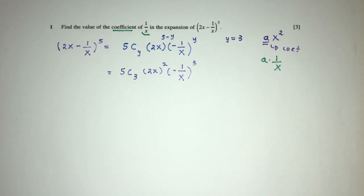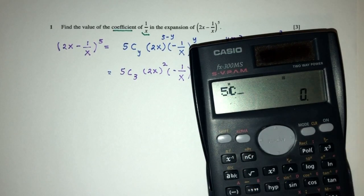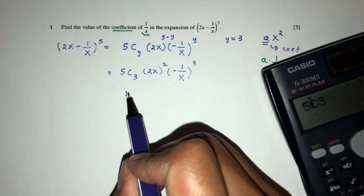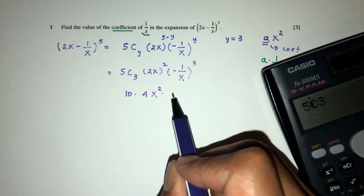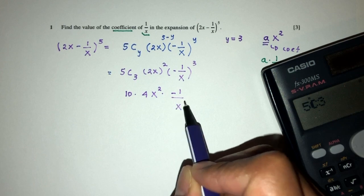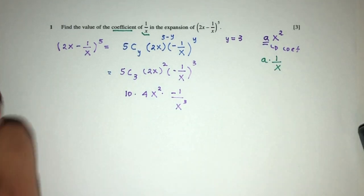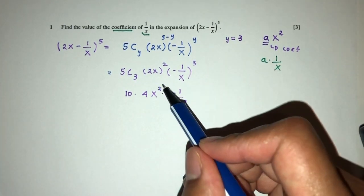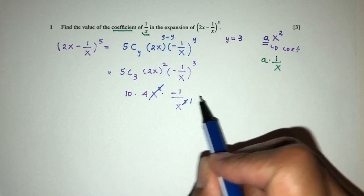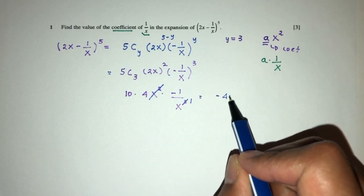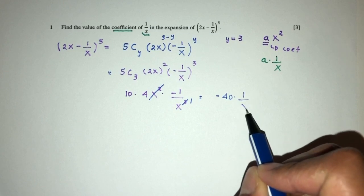Now you can see, in this case, I will have 5 choose 3, that will be 10, that will be 4x squared multiplied by minus 1 over x cubed. Simply, we just have to simplify. This one will cancel out with this. So you will have minus 40, 1 over x.